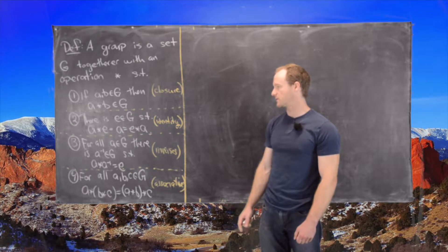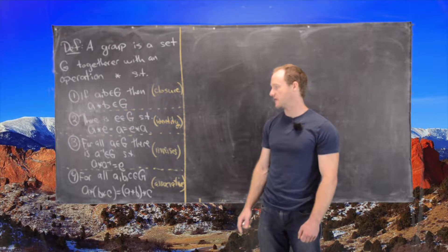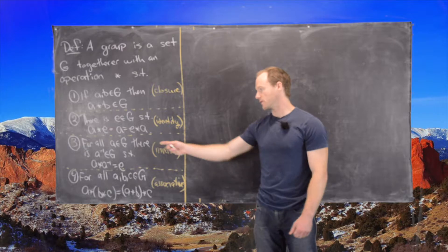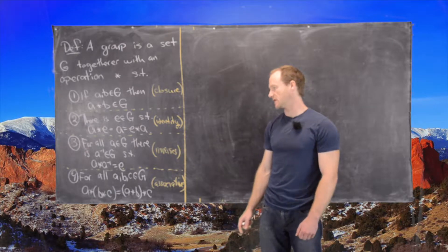And next is for all A in G, there is an A inverse in G which is the inverse. So in other words, A star A inverse equals the identity.